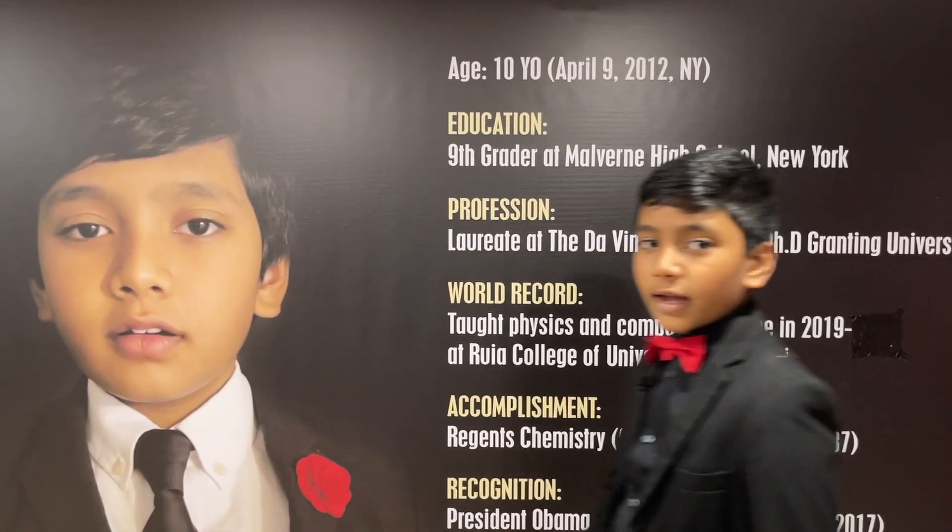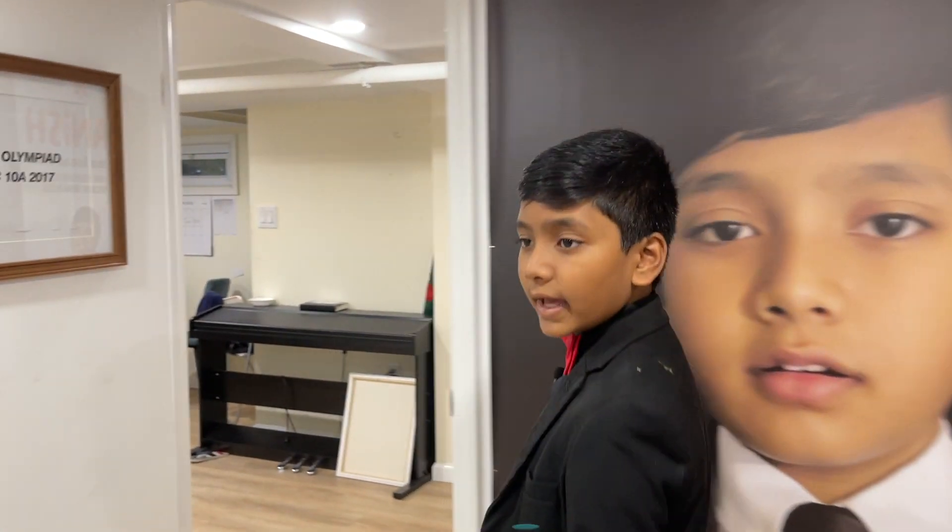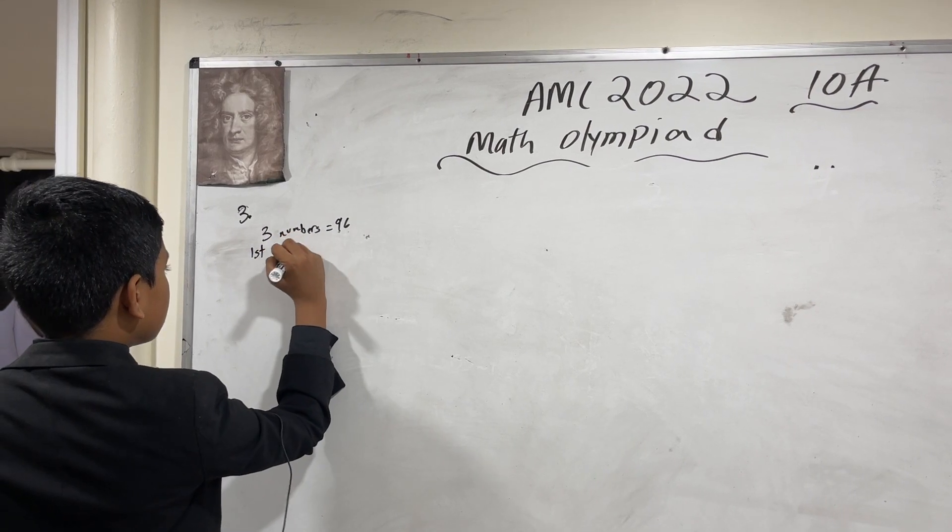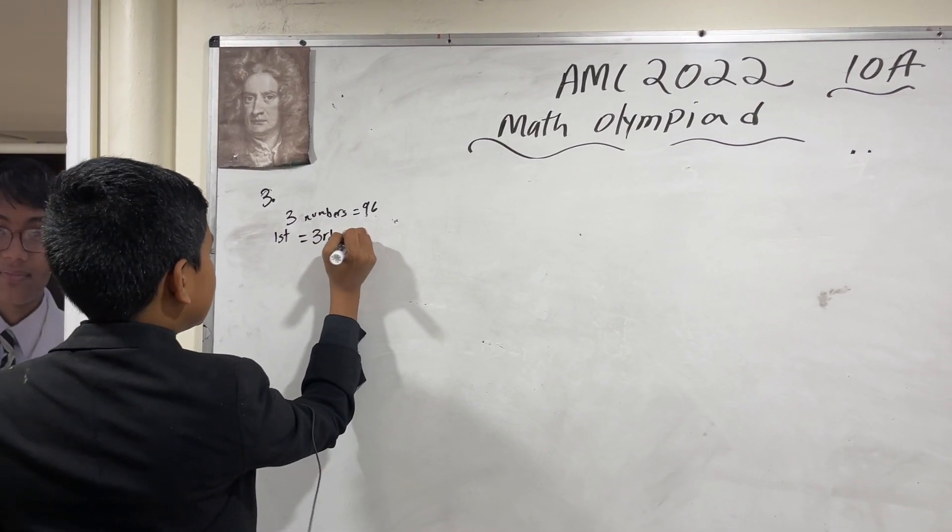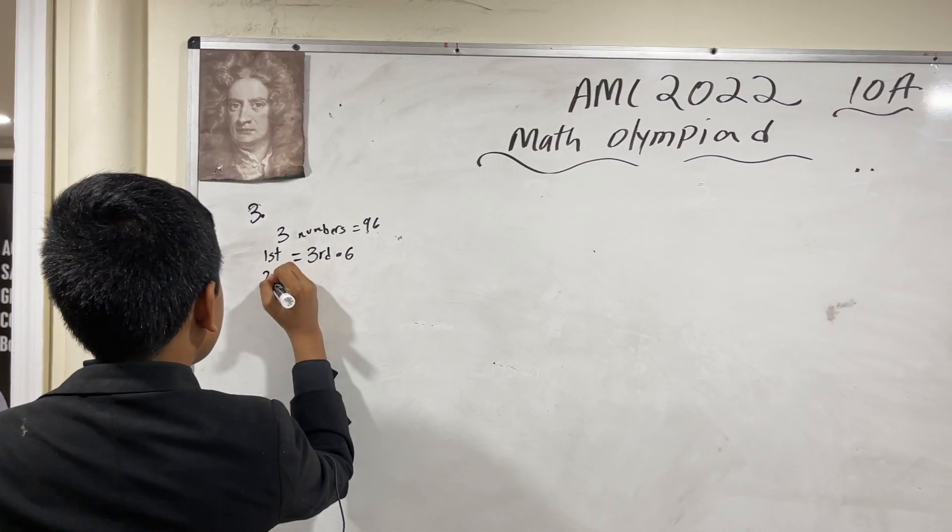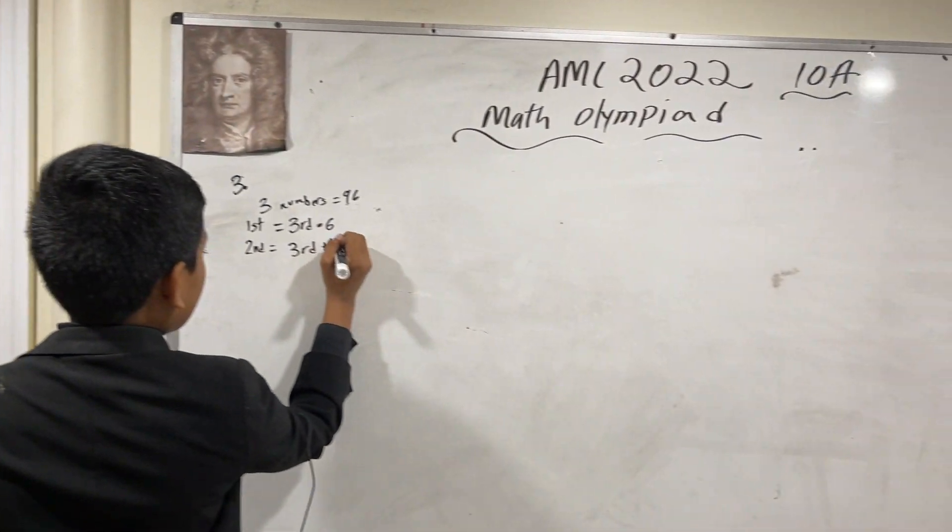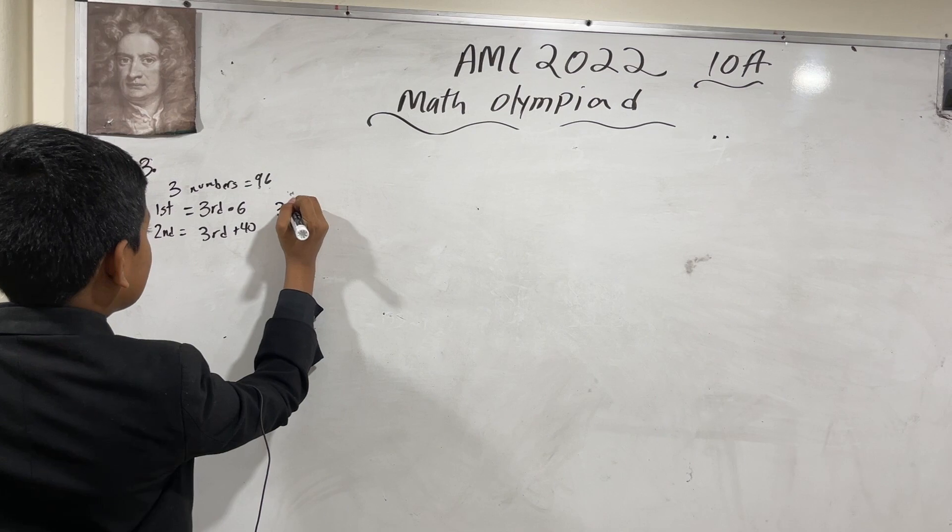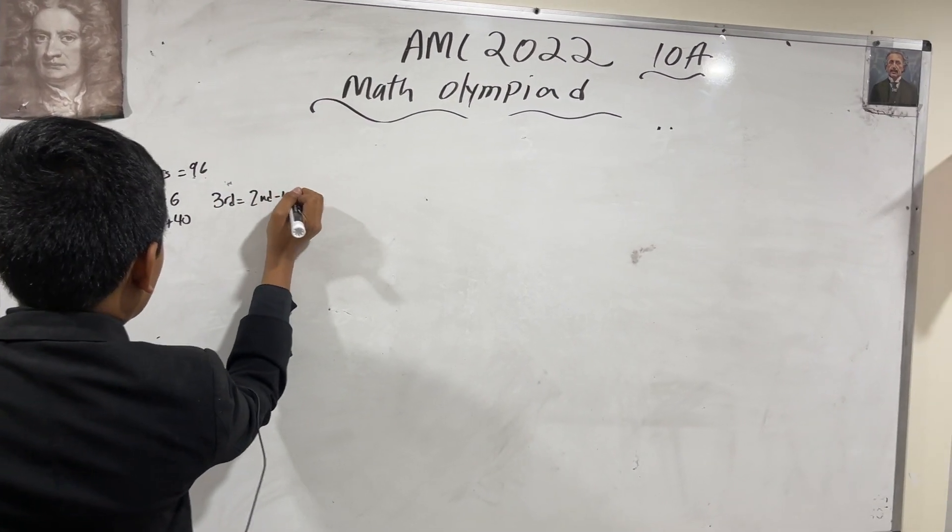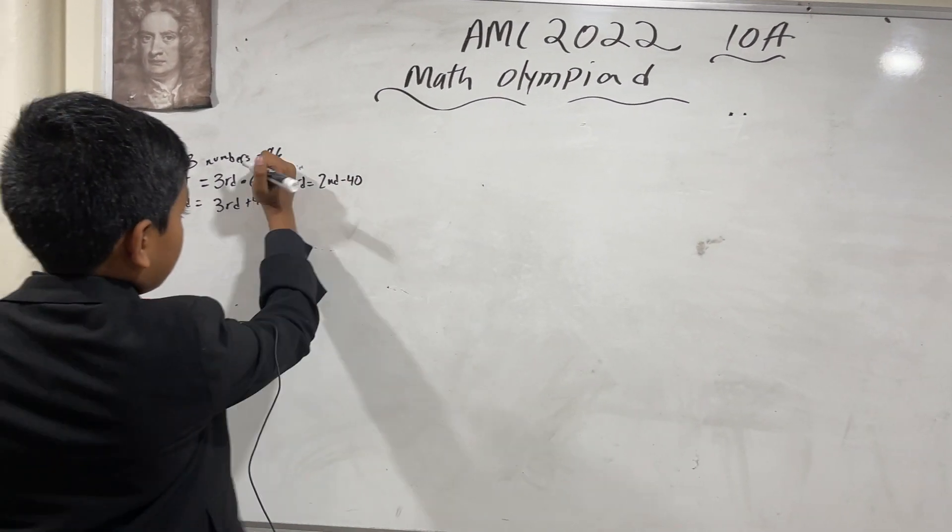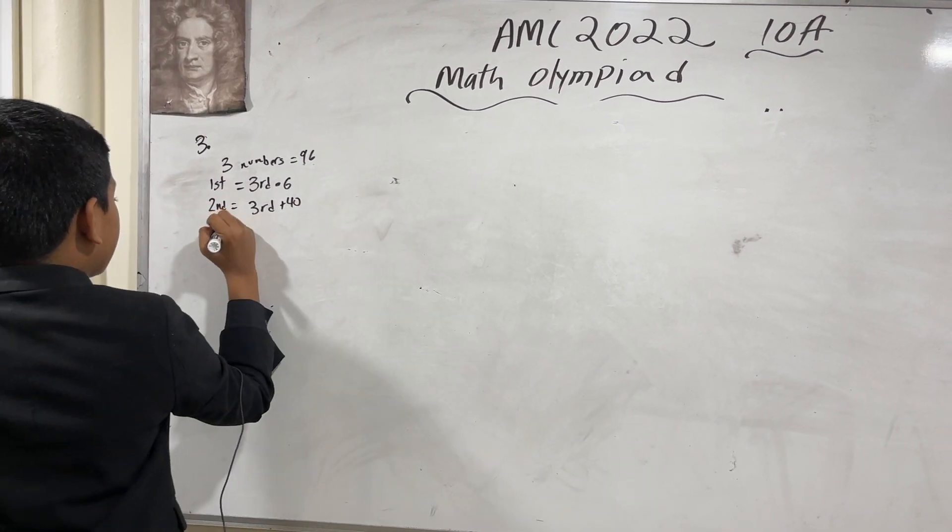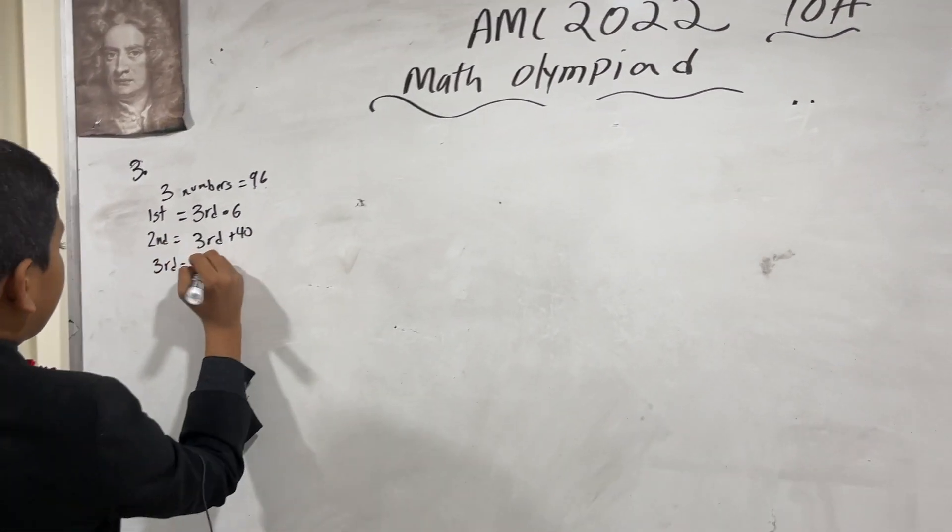The sum of three numbers is equal to 96. The first number is equal to the third number times six. The second number is equal to the third number plus 40, or differently stated, the third number is the second number minus 40.